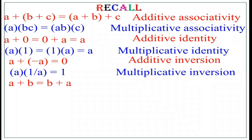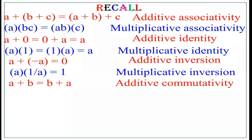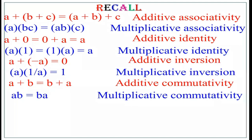A plus B equals B plus A — take any two natural numbers: 5 plus 3 is 8, which equals 3 plus 5. This property is known as additive commutativity. With respect to multiplication, it becomes AB equals BA, known as multiplicative commutativity. The commutative property with respect to addition is A plus B equals B plus A; with respect to multiplication, AB equals BA.